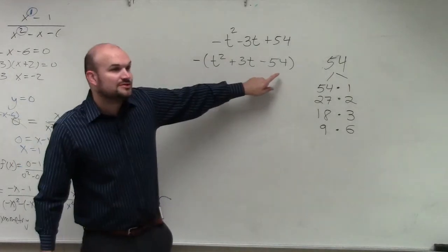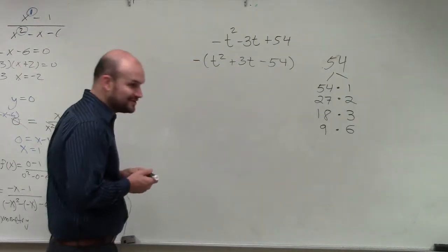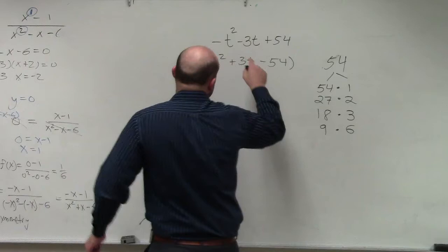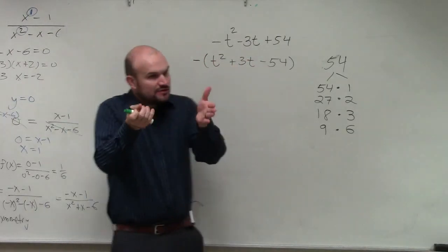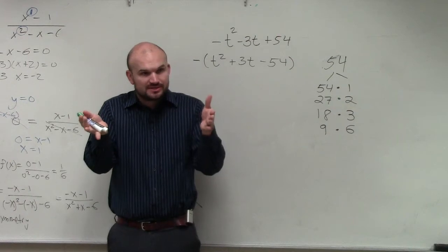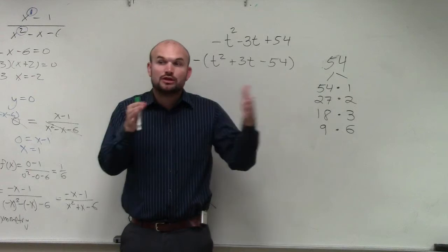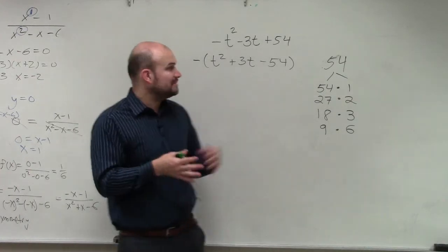Now remember, these two numbers have to multiply to give you negative, right? So that means one of the factors has to be negative. Would you guys agree with me? Yes. And however, they add to give you, in this example, a positive 3. So which factor? If two numbers multiply to give you a negative, one of them has to be negative. But they add to give you a positive. Should the larger number or the smaller number be negative? Smaller number. Smaller numbers should be negative.